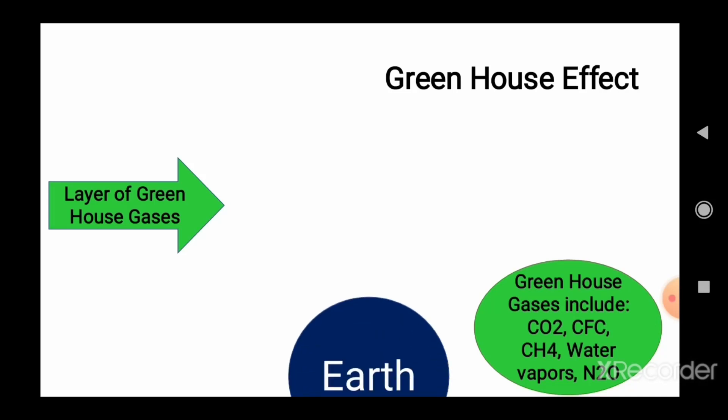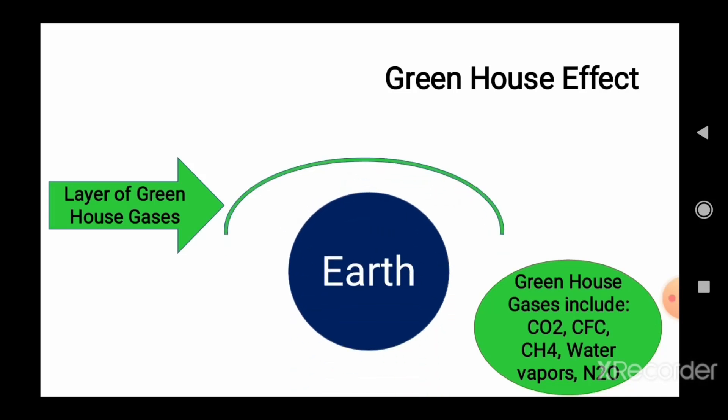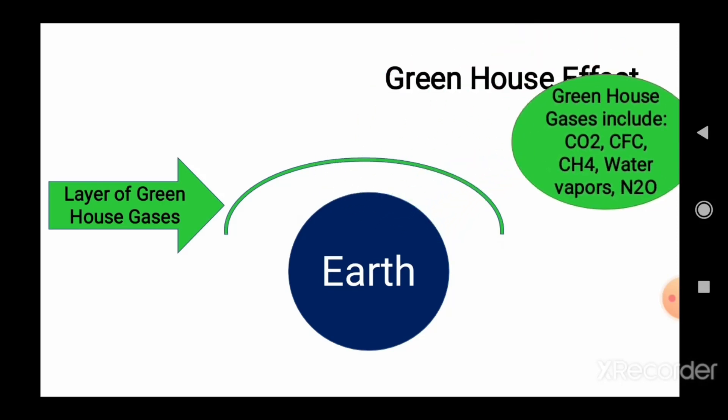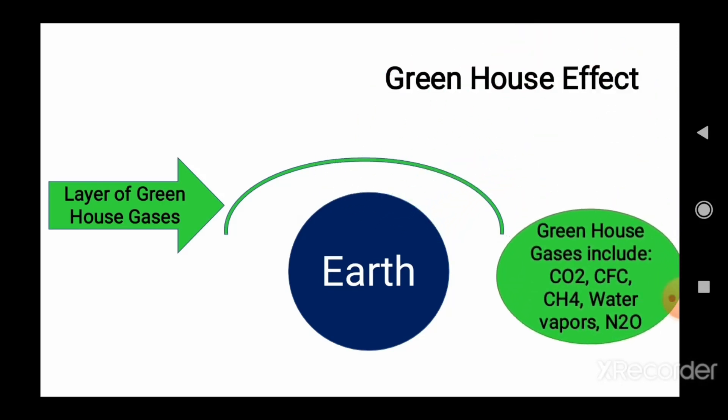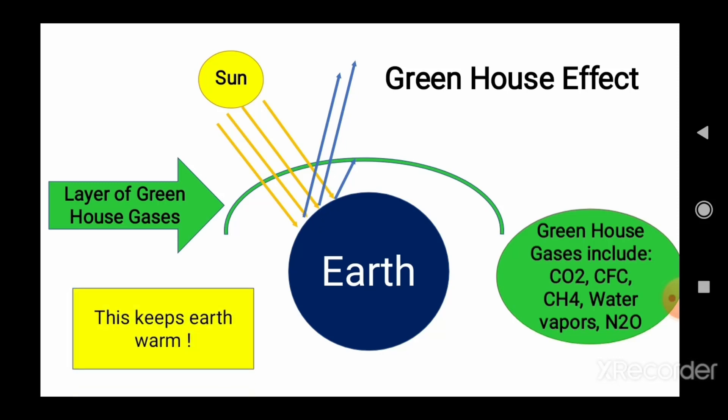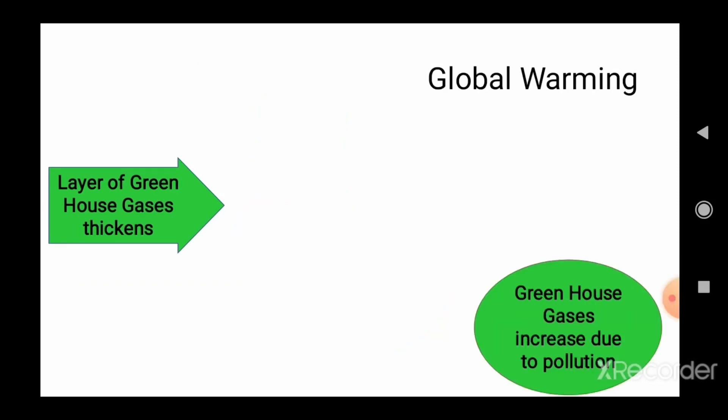Earth is covered with greenhouse gases such as carbon dioxide, chlorofluorocarbons, methane, water vapor, and nitrous oxide. When solar radiation is incident on Earth's surface, some radiation is absorbed, some is trapped inside, and some is reflected back into the atmosphere. This keeps Earth warm. This phenomenon is essential for survival of life on Earth.